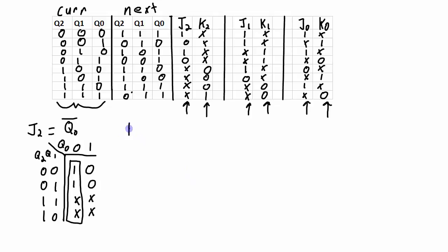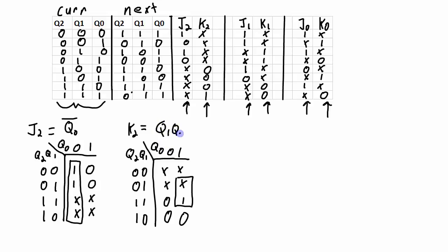And repeat the process for K2. We only need one group, and we get K2 is equal to Q1 and Q0. Now do the same thing for J1.